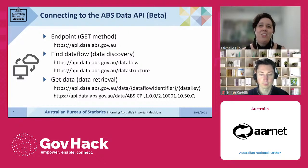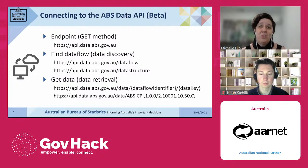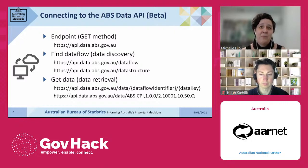Once you know your API request or call, you can customise it by adding a data flow identifier and the data key. For example, the URL you see on the screen with a string of codes at the end. That way, you can customise your code to return only the data and metadata you are interested in, in the format you want.